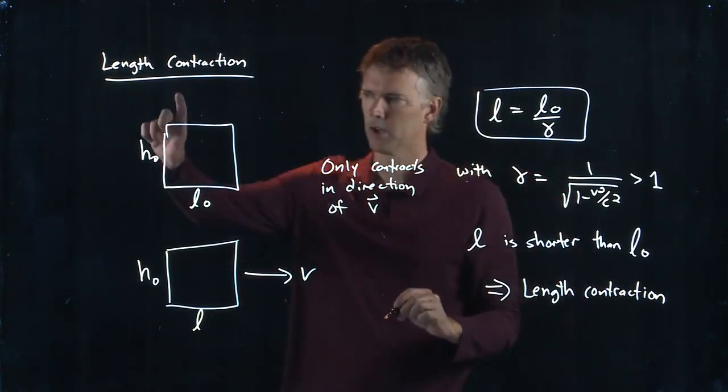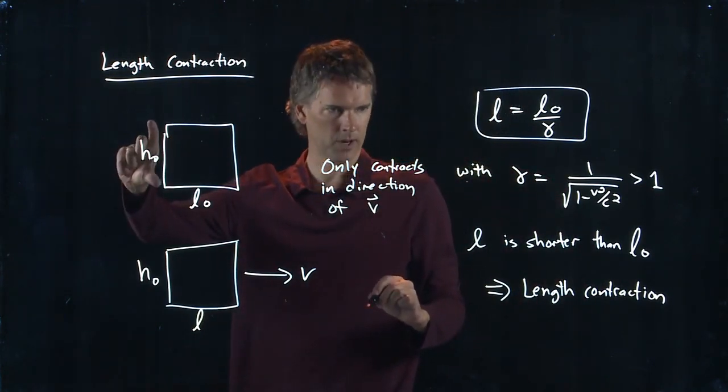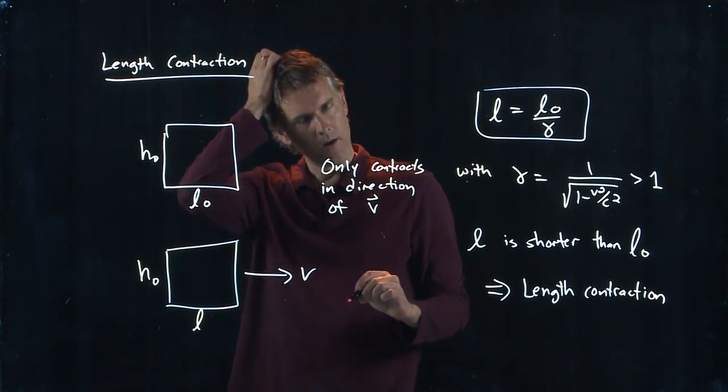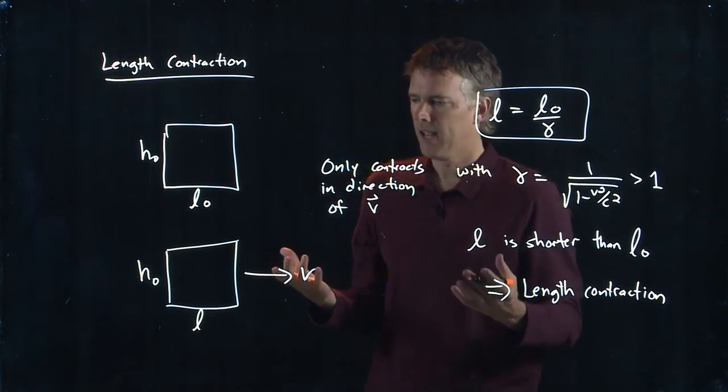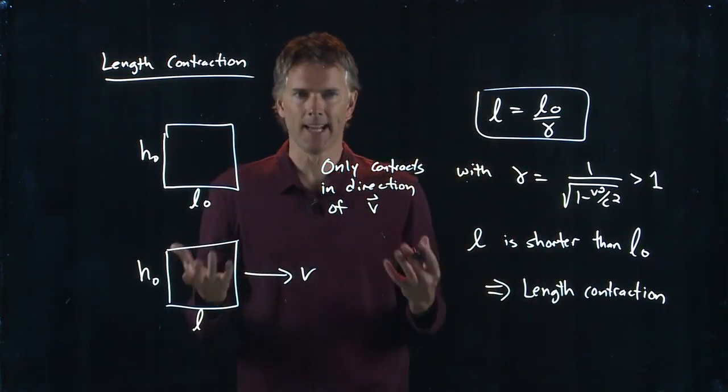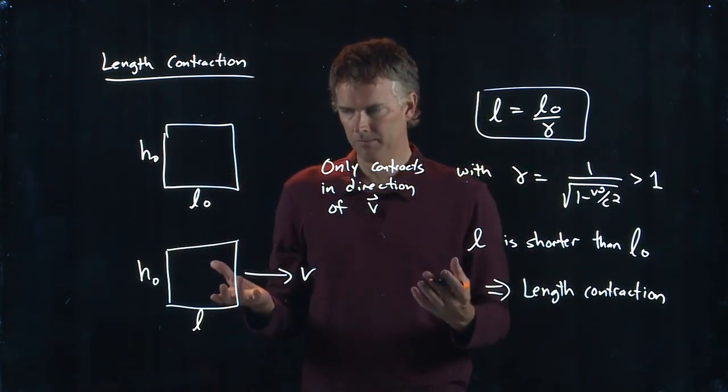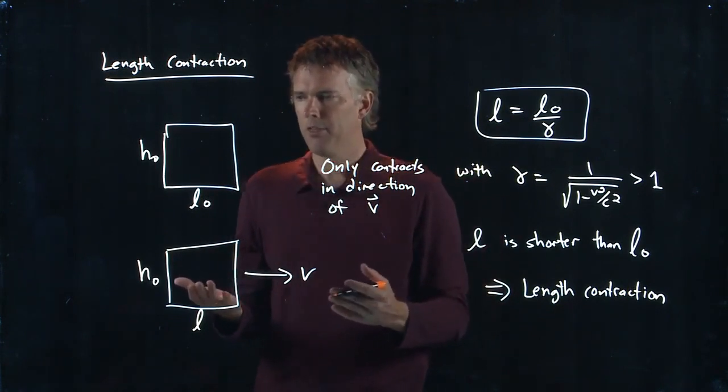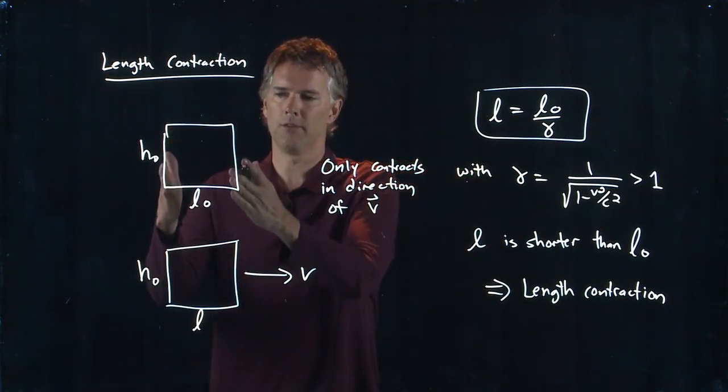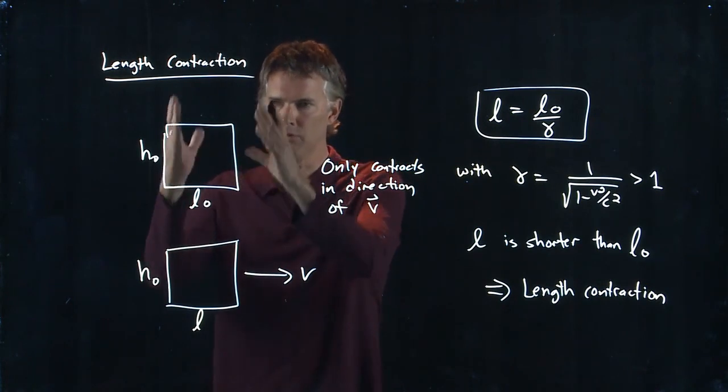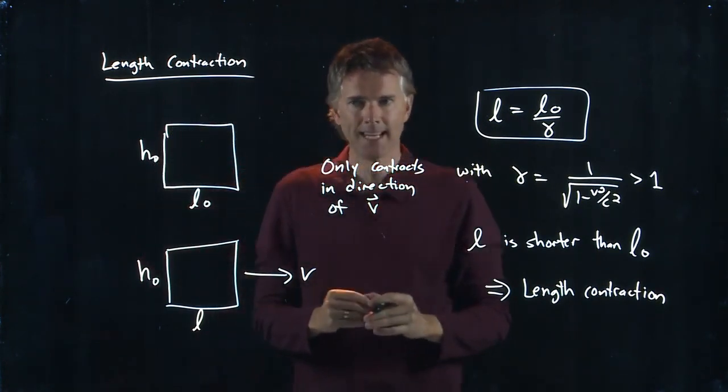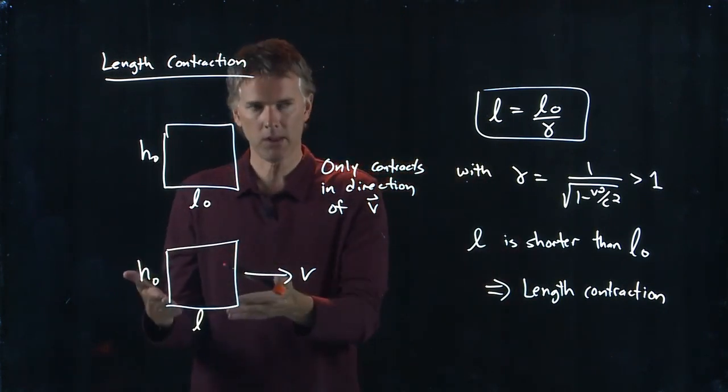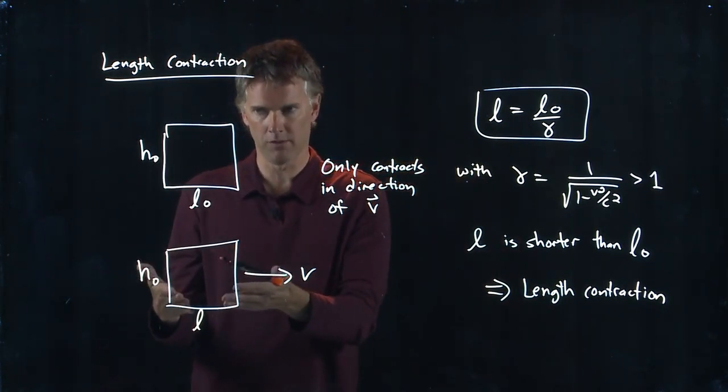It doesn't contract in the transverse direction. In class we said that when Einstein started thinking about these problems, he was thinking about the electrodynamics of moving bodies. If you think about electric fields and magnetic fields due to chunks of charge, you have to consider the length contraction in these systems as well.